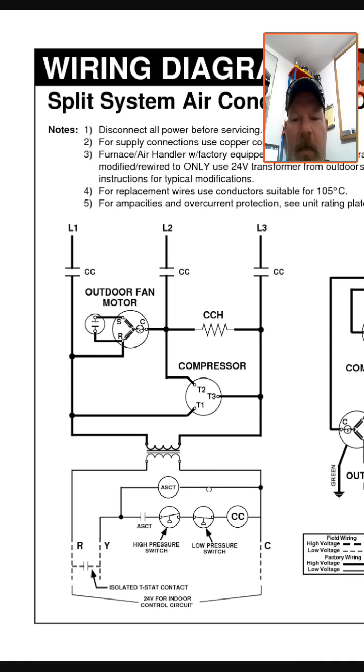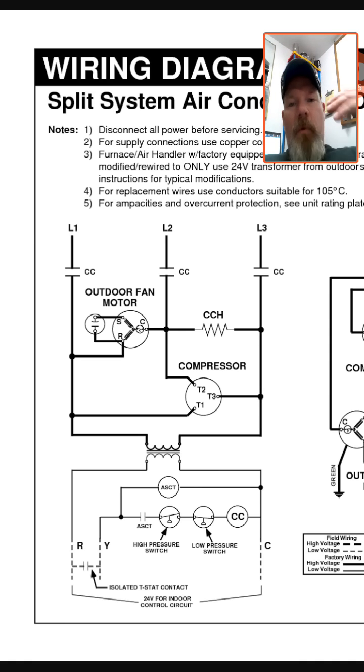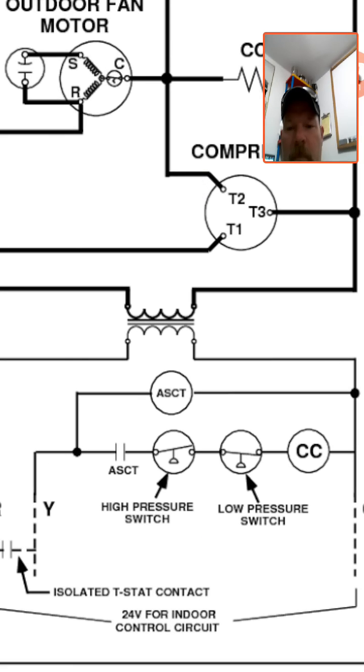The ASCT here powers a countdown module, basically, and that is a load. So R powers it, common on the other side. This is a completed circuit. As soon as R makes to Y, it comes in, powers this, and starts counting down typically five minutes. That way your compressor doesn't come right on in the event of somebody playing with the thermostat or a power outage or something like that. After five minutes, this contact sends power through.